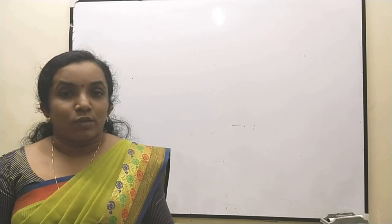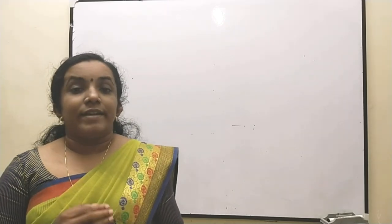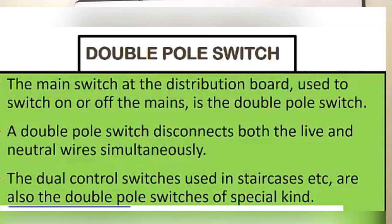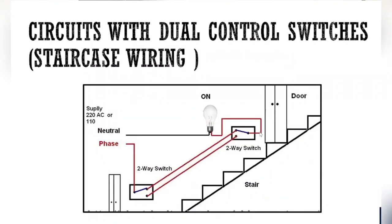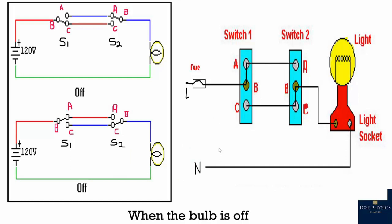For proper functioning, a switch must be connected to the live wire. A double pole switch disconnects both the live and neutral wires simultaneously; the main switch is an example. A dual control switch, used in a staircase, is a special kind of double pole switch — one installed at the top and one at the bottom of the staircase.